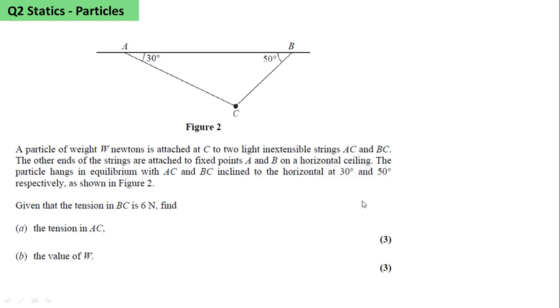Question 2: Statics of a particle. A particle of weight W newtons is attached at C to two light inextensile strings AC and BC. The other ends of the strings are attached to fixed points A and B on a horizontal ceiling. The particle hangs in equilibrium with AC and BC inclined to the horizontal at 30 and 50 degrees respectively.